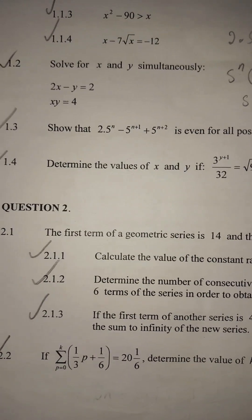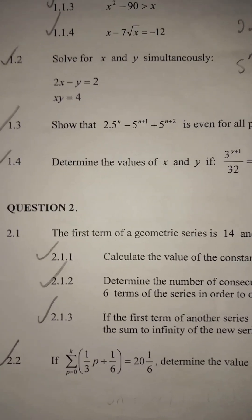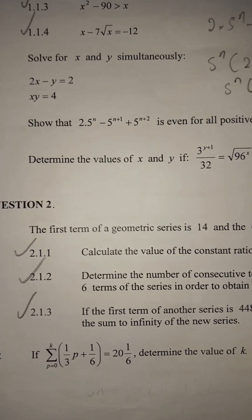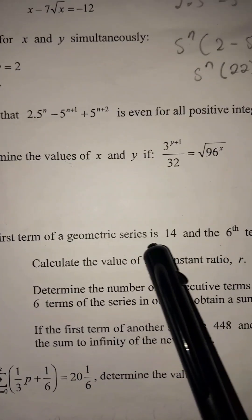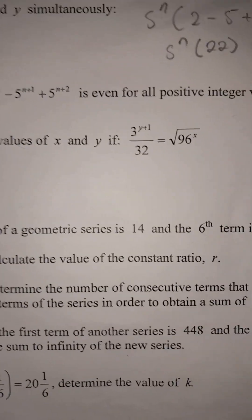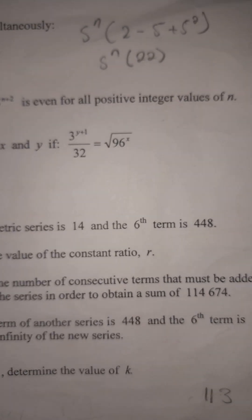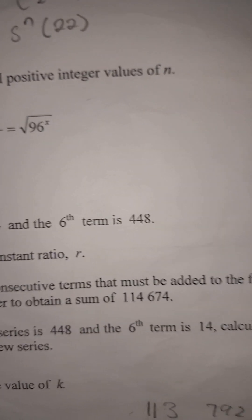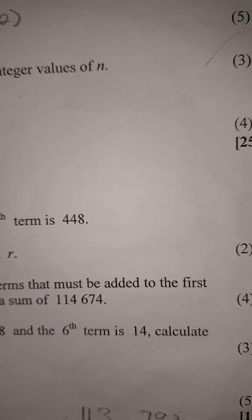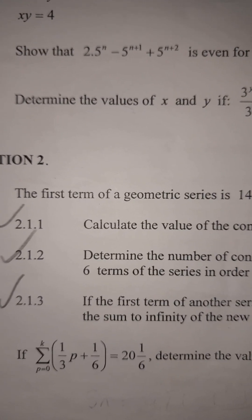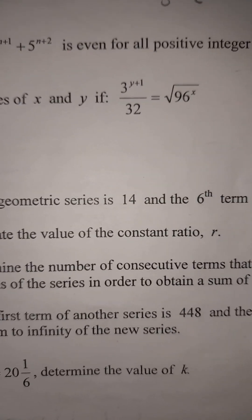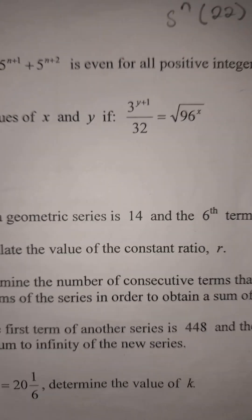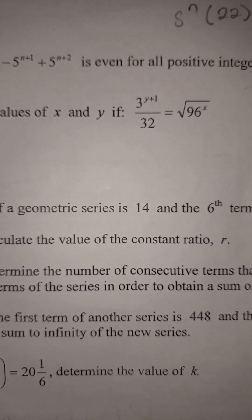Hope you'll find this video useful and we will win! Let's look at the first question. The first term of a geometric series is 14 and the sixth term is 448. That's two marks. At 2.1.1 we are required to calculate the value of the constant ratio r.